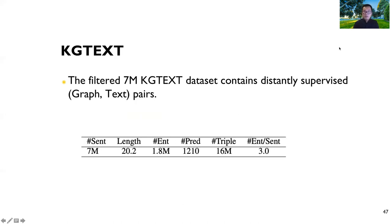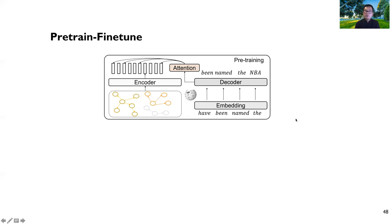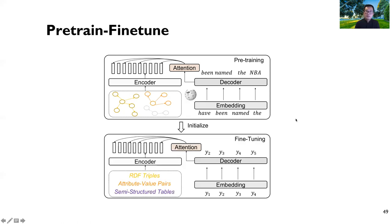We constructed the KG-text dataset, which contains distantly supervised graph-text pairs at the 7 million level — 7 million sentences with 16 million triples describing entity relationships. After collecting this data, we pre-train a model and then initialize downstream applications and fine-tune to specific datasets.